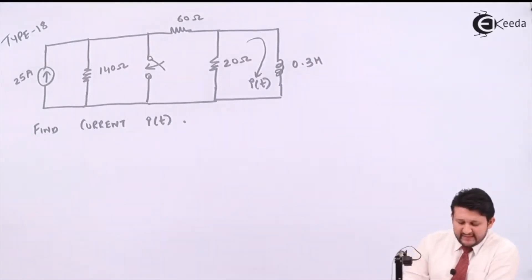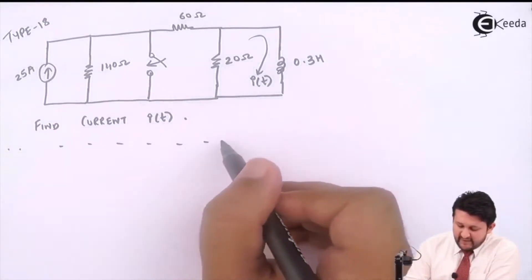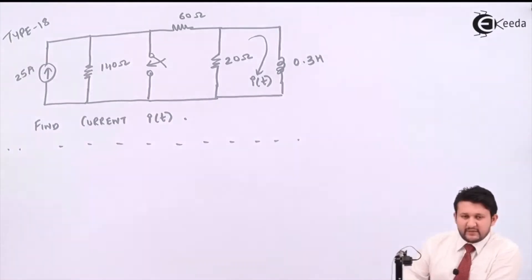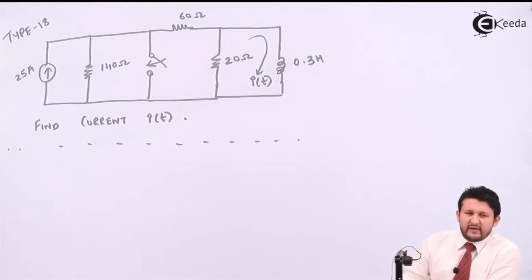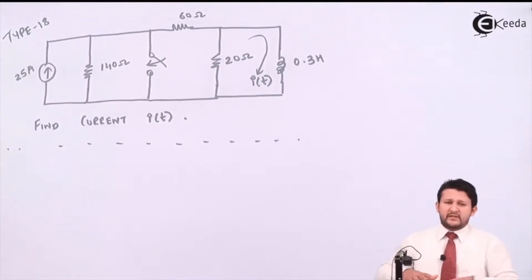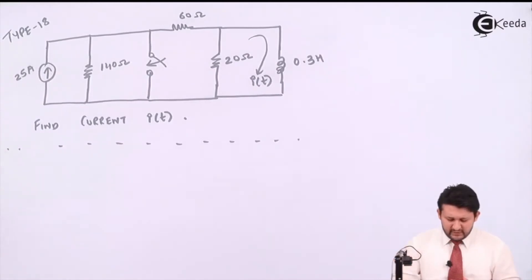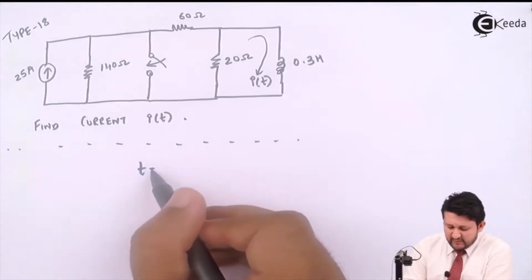Let's have a look at our next type — Type 18. We need to find i(t) in the following equation. To find i(t), we need to observe the circuit. If it is not mentioned about steady state, by default the circuit will be in an initial state, which means there is no current flowing in the inductor and in the capacitor.